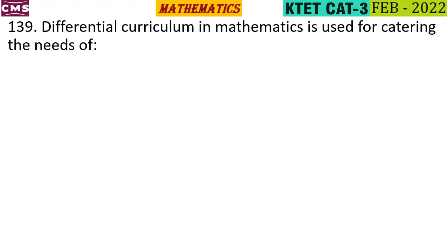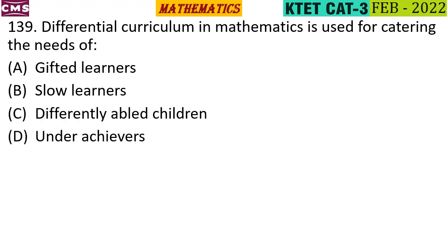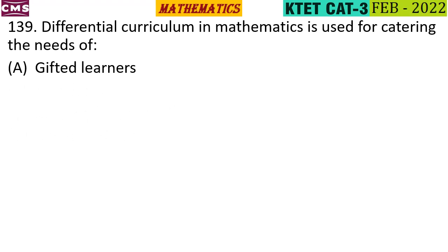Differential curriculum in mathematics is used for catering the needs of which group? The options are: gifted learners, slow learners, differently abled children, and underachievers. The correct answer is option A — gifted learners.